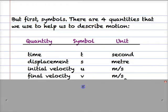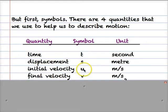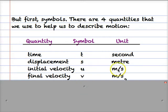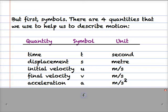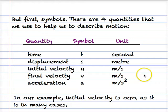We also have velocity or speed. We have the initial, starting velocity u — that's often zero but not always — and the final velocity v, the speed the object is travelling after t seconds. Both of those are measured in meters per second. And we have the acceleration, symbol a, measured in meters per second squared. These are the symbols we use in the equations.